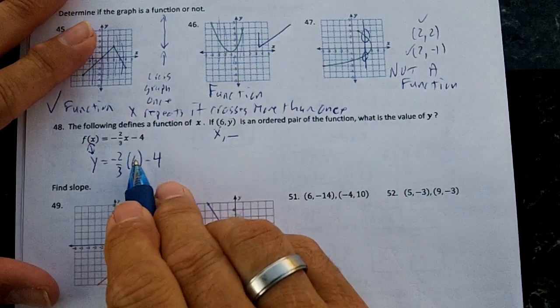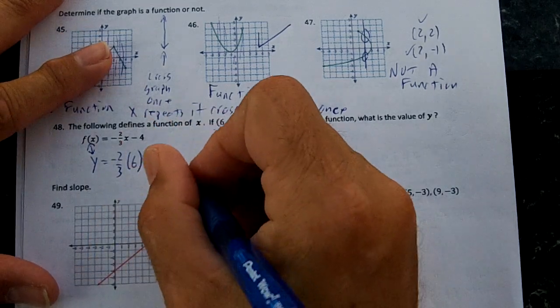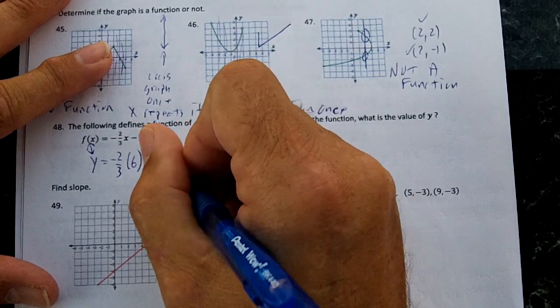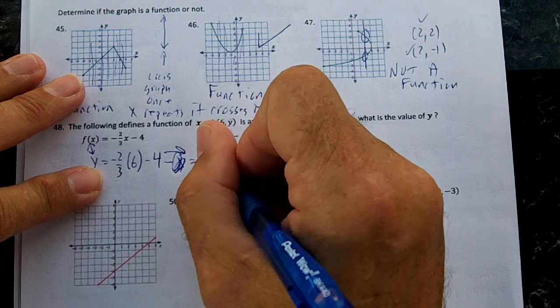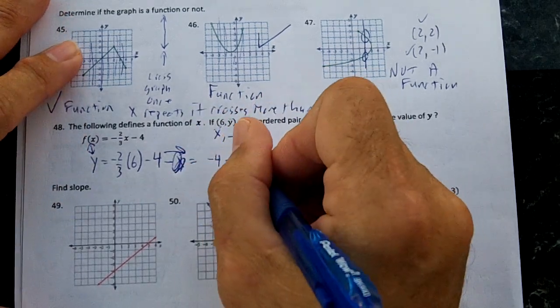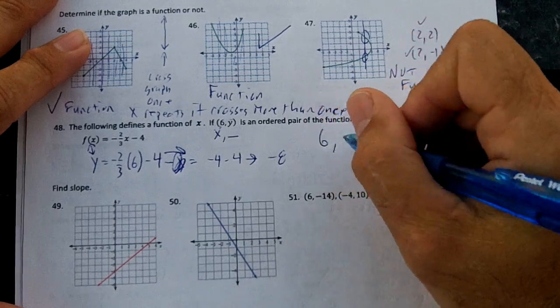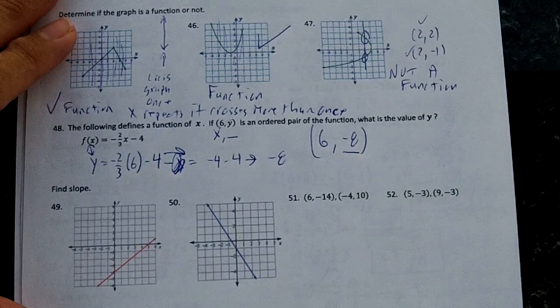So negative 2 times 6 is negative 12. Negative 12 divided by 3 is negative 4. So Y equals, or let's just do this. This is going to turn into negative 4 minus 4. And negative 4 minus 4 is negative 8. So at 6, our output is negative 8. So negative 8 is our Y when our X is 6.